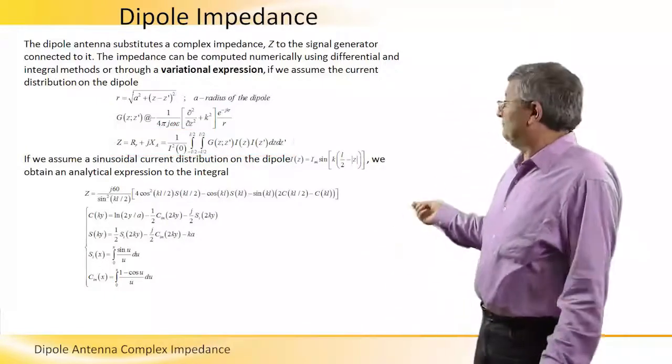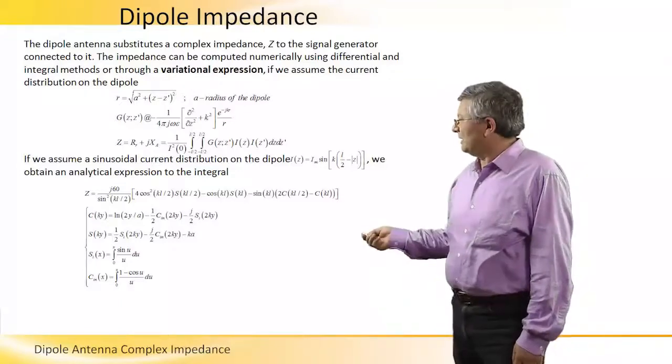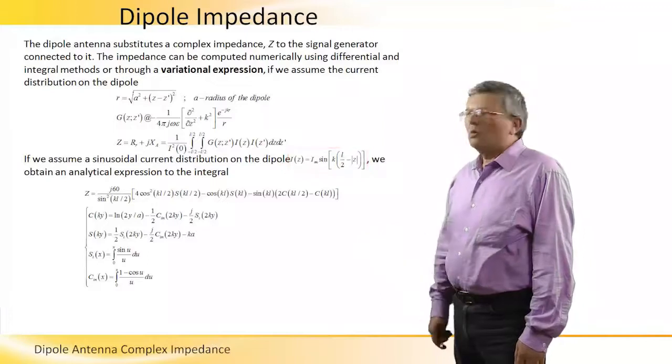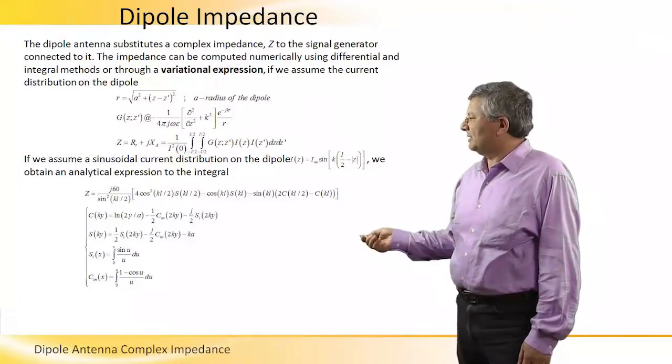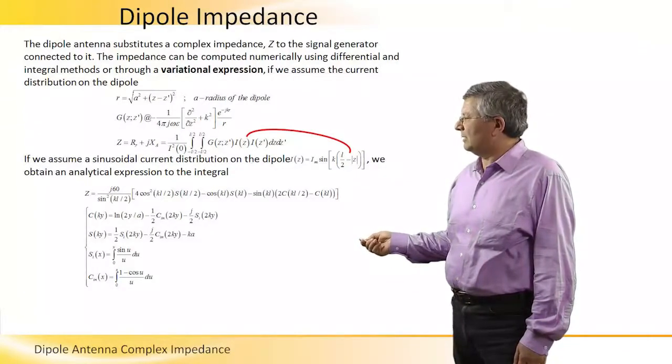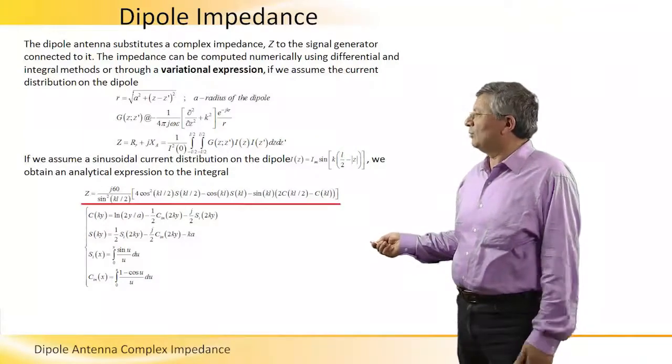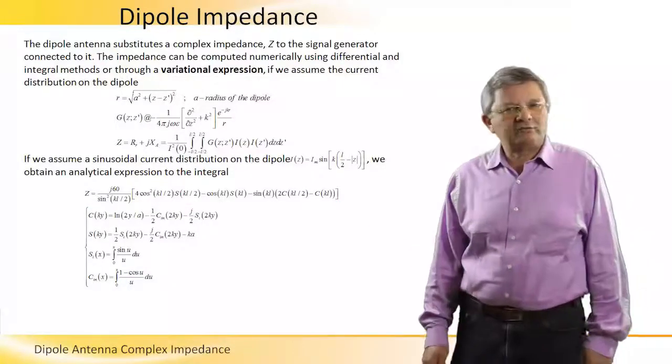So if we assume, for instance, sinusoidal current distribution on the dipole, like expressed here, we can obtain an analytical expression to this integral by substituting this current distribution into the integral and performing the integral. This is the analytical form of the complex impedance.